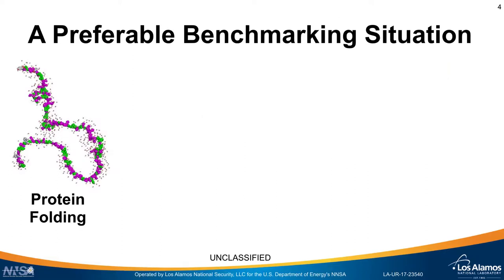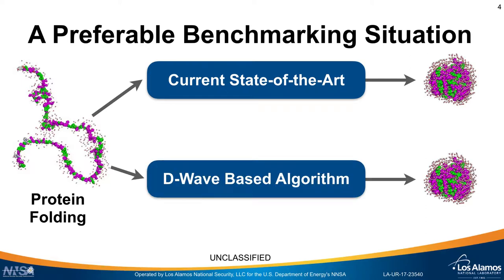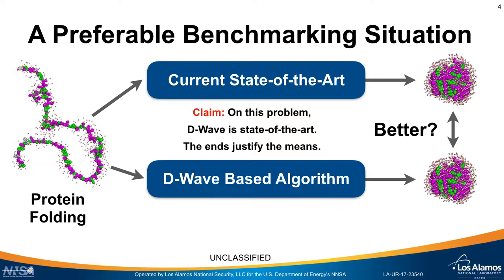Before we get into exactly what we did, let's talk about a preferable situation for benchmarking optimization algorithms. The typical approach is to take a problem of interest — say, protein folding — find the state-of-the-art algorithm for solving it, implement it, and produce a result. Then you develop a D-Wave-based algorithm for the same problem, compare the two results, and ask which is better. This works nicely because the claim you want to make is that the D-Wave algorithm is the state-of-the-art method — the ends justify the means.